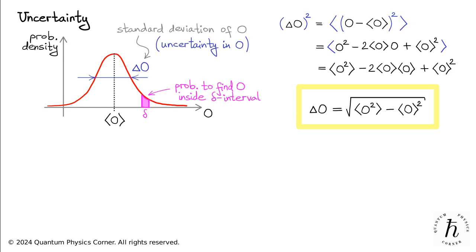To see how this works in practice, let's look at our recurring example system, a coherent state of a harmonic oscillator. Let's determine the uncertainties in position and momentum for a particle of mass M undergoing simple harmonic oscillations with frequency omega.